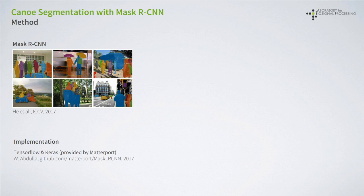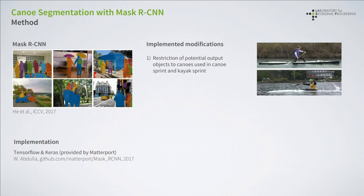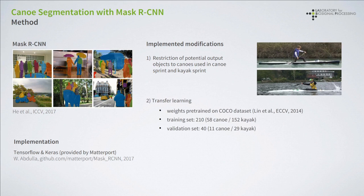Our waterline detection method is principally based on the Mask RCNN approach as presented by He and colleagues in 2017. In order to apply it to our problem, we used the implementation as provided by Metaport, and based on that we implemented some modifications to adjust the network to our needs. First of all, we restricted the network output to only two objects — canoes used in canoesprint, which corresponds to the upper image, and canoes used in kayak sprint.